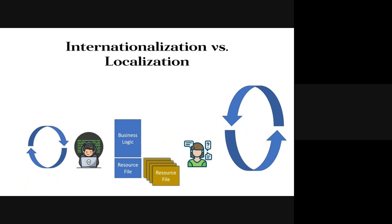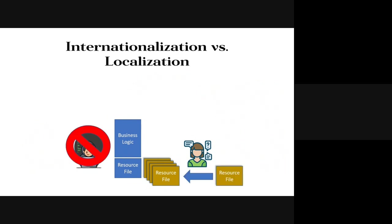The cycle times for these groups vary, and we generally don't want the localization process to interrupt software development. Developers don't want to wait to check in their code for the German translator to wake up. But there is a dependency — there's nothing to translate until source code is created. Once the software product has been created, it doesn't necessarily require developers to produce a target language product, so you can add languages without software developers if you've done the internationalization correctly.